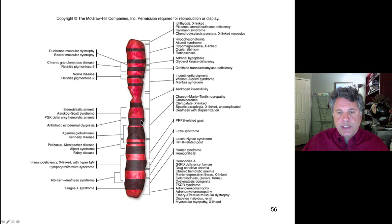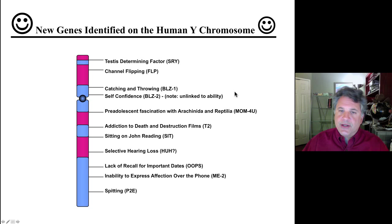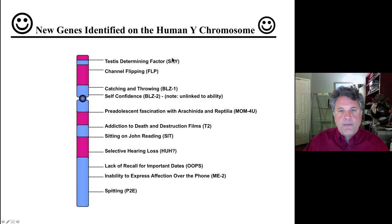Here is a joke slide of the Y chromosome. The SRY gene is real — it is the sex-determining gene in mammals. If you have a Y chromosome with an intact SRY gene, a mammal will develop as a male; if a mammalian embryo lacks SRY, usually by lacking a Y chromosome, it will develop as a female. The other genes shown are imaginary jokes. You're welcome to pause the video and laugh if you choose.